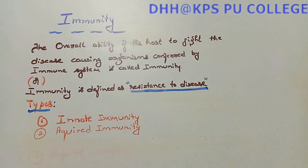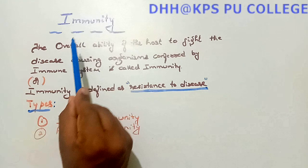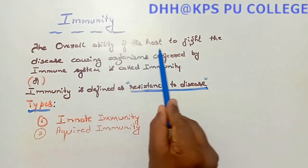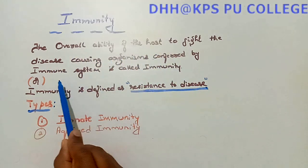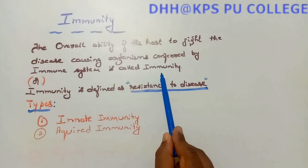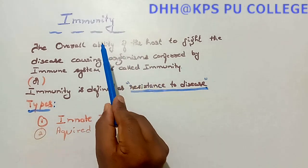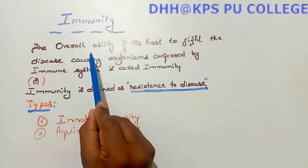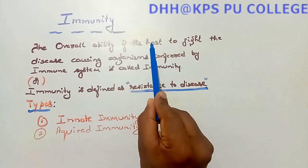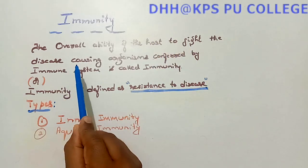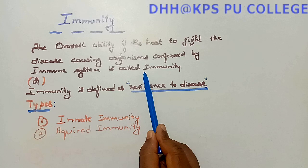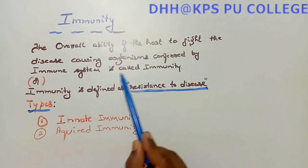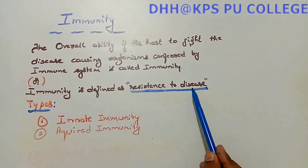So let us learn the definition of immunity. Immunity is the overall ability of the host to fight against disease-causing organisms, which is conferred by the immune system. Immunity is also called resistance to disease.